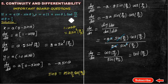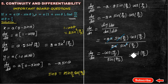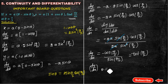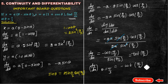The given problem asks to find dy/dx at θ = π/3. So dy/dx = -cot(θ/2). Substituting θ = π/3, we get -cot(π/6). Since cot(π/6) = cot(30°) = √3, the final answer is dy/dx = -√3.